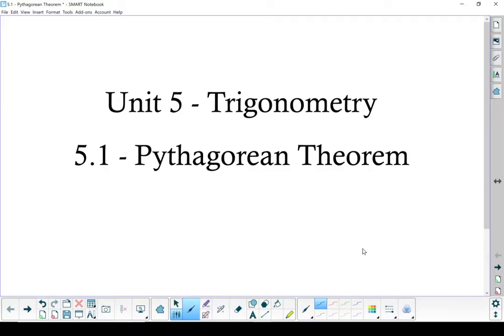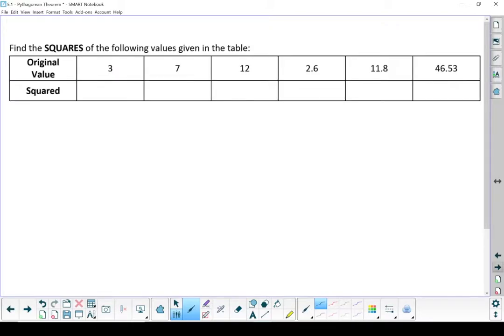Unit 5, Trigonometry, Section 5.1, the Pythagorean Theorem. Let's work on some pre-skills here. First of all, let's talk about squaring numbers.